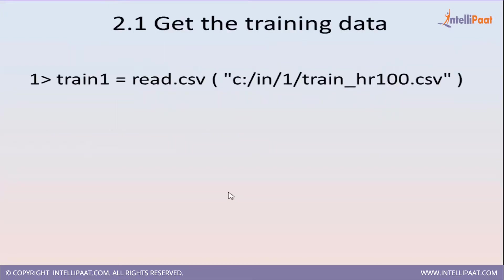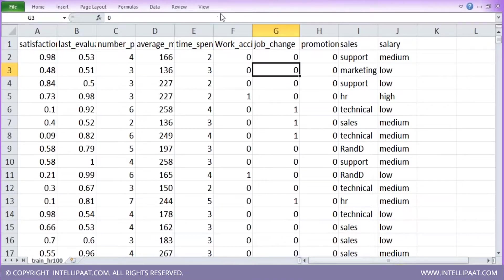Let us get the training data. As discussed earlier, in case of supervised learning we have a set of training data on which we will build the model and then we can do the prediction. Here you can see I am reading a CSV file which has been stored here and the whole CSV file goes to the variable called train1. This CSV file is open here.